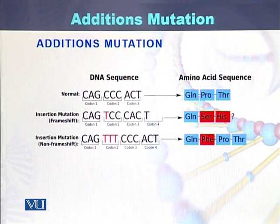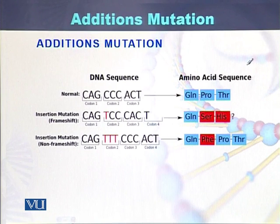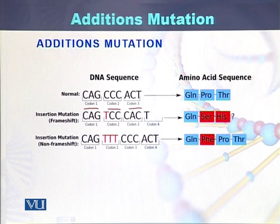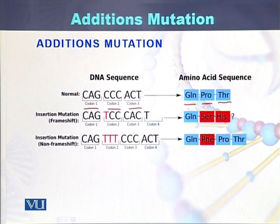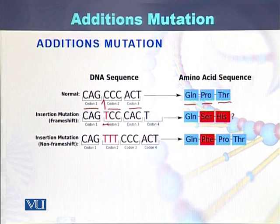This is a second example of the addition mutation. In this diagram, we can see that this is the normal sequence of the DNA in the form of codons — codon 1, codon 2, codon 3. These codons encode for the amino acids glutamine, proline, and threonine. When there is addition of a single nucleotide in the form of T, this T is added between this G and C. At this point, this T has been added, which is called an addition mutation.